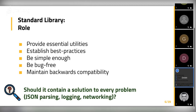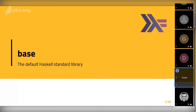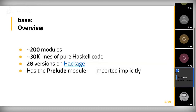Let's talk about base. Base is the default Haskell standard library. It contains approximately 200 modules, 30,000 lines of pure Haskell code not counting documentation and blank lines, and has 28 versions on Hackage. Base is usually released at the same time as a new GHC version, which happens approximately two to three times per year. Base has existed for a very long time — it's a very mature standard library with a long history. It has a special module called Prelude.